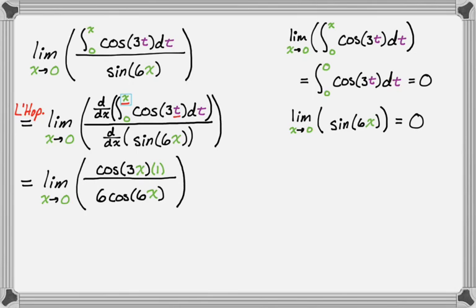At this point we can do direct substitution. Cosine of zero is 1, so the numerator gives 1 times 1, and the denominator gives 6 times 1. So the answer is just 1/6.